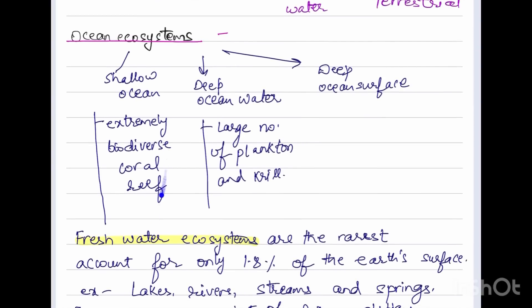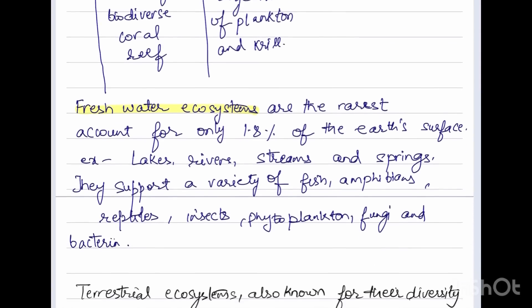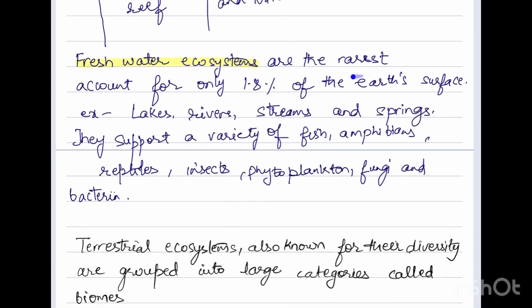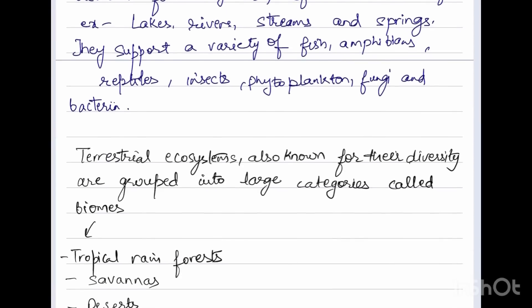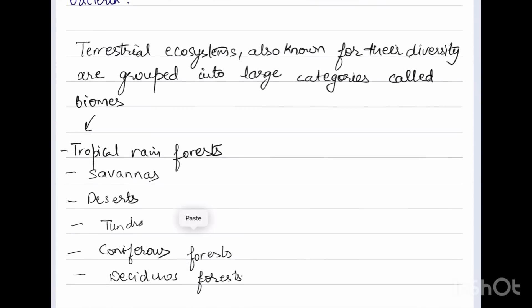The shallow ocean is extremely diverse, with coral reefs as examples, and deep ocean water has large numbers of planktons and krill. Freshwater ecosystems are the rarest, accounting for only 1.8 percent of the Earth's surface, for example lakes, rivers, streams, and springs. They support a variety of fish, amphibians, reptiles, insects, phytoplankton, fungi, and bacteria.